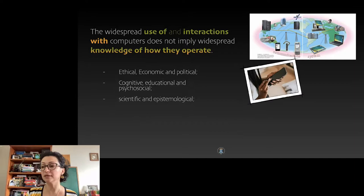Implications of this fact range from ethical, economical, and political issues such as data privacy, algorithmic bias, software ownership and surveillance, to cognitive, educational, and psychosocial questions about how the use of computers transforms our cognitive and social abilities, and more specific issues such as why and how scientific practices are more or less affected by the pervasive use of computers and the advances in computer science.